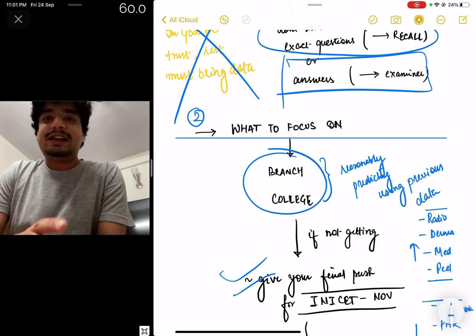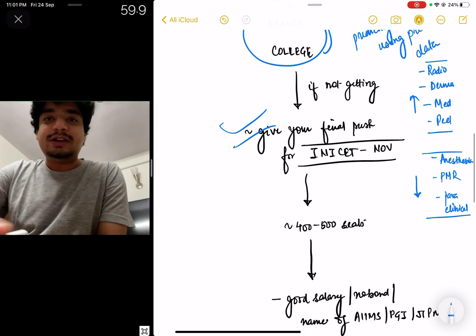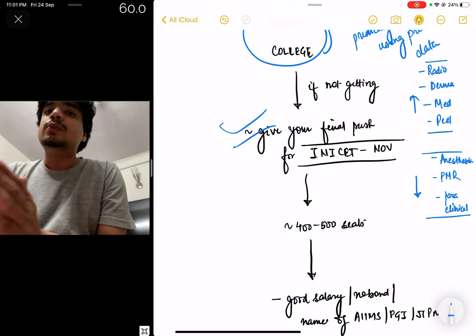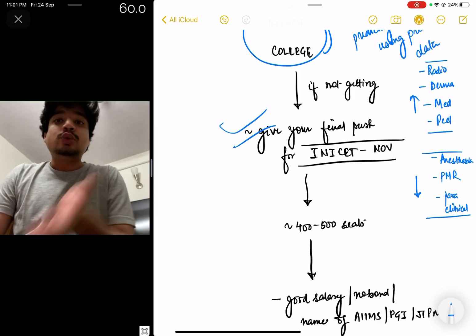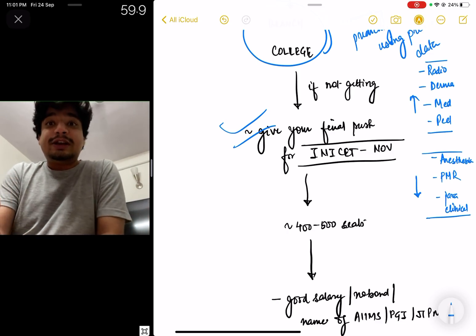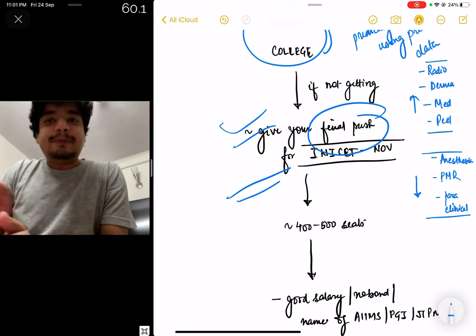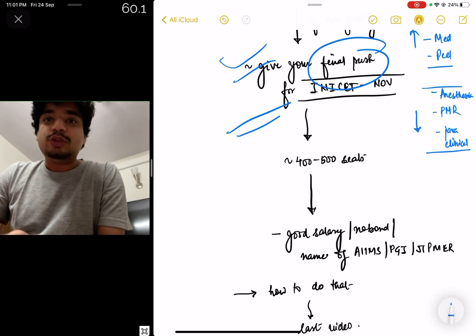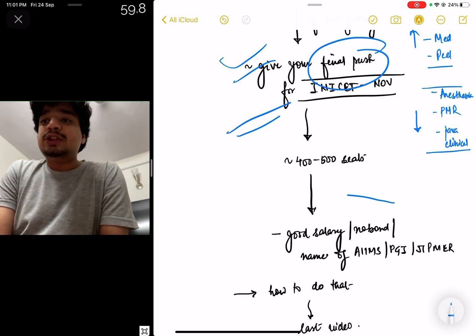If you're not getting your dream branch or dream college, then I'll suggest you should give a final push this one month final push for INICET. I understand the number of seats are low, just 400-500 seats in good clinical branches. However, a lot of people will be tired, a lot of people will not study, a lot of people will be getting good seats close to their hometowns through NEET PG.